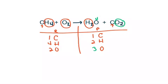This is a good example where I have carbons equal, but my hydrogens are not equal, nor are my oxygens. So this is not a balanced chemical equation.